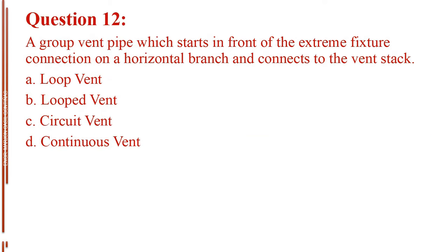Question number 12. A group vent pipe which starts in front of the extreme fixture connection on a horizontal branch and connects to the vent stack. Letter A, loop vent. Letter B, looped vent. Letter C, circuit vent. Letter D, continuous vent.